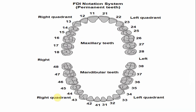In the FDI notation system, counting from central incisor, lateral, canine, and first premolar, the number is 34. The three indicates mandibular left quadrant, and four indicates the number of the tooth. For the mandibular right quadrant, the number is 44 — the first four indicating the mandibular right quadrant, and the second four indicating the tooth number.